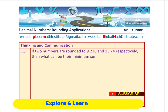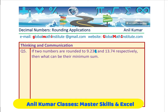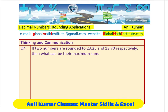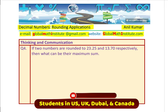We want 9.23 and 13.75 and the minimum sum. So you are looking for maximum and minimum sum when the numbers are rounded to the hundredths place. I'd like you to pause the video and answer these two questions and then look into my suggestions. In case you want to learn from me, you can always send an email on the address given. Most of my students are getting excellent marks and some are getting even awards and scholarships.